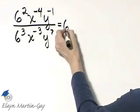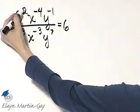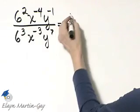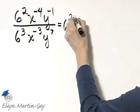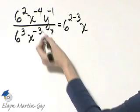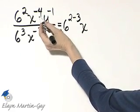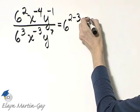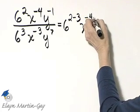This will be 6 raised to the power of numerator exponent minus denominator exponent. That's 2 minus 3. Then we have some like bases here in x raised to the power of, be very careful, that's numerator exponent negative 4 minus,